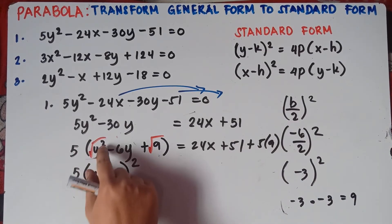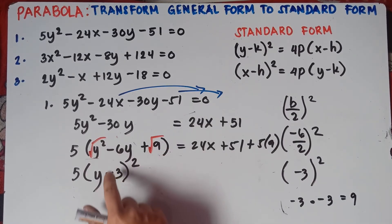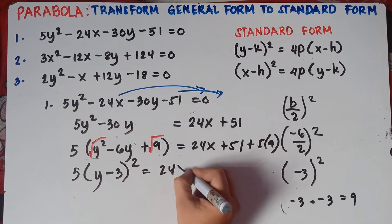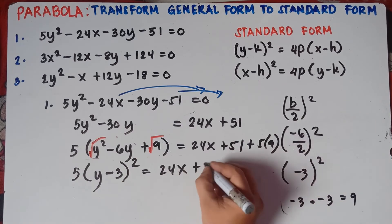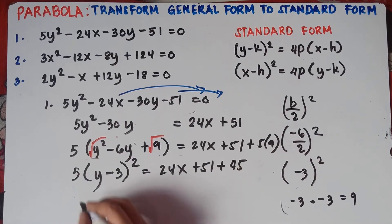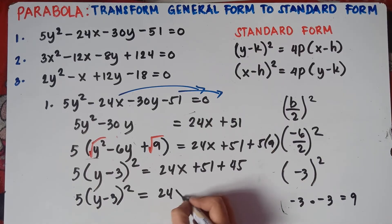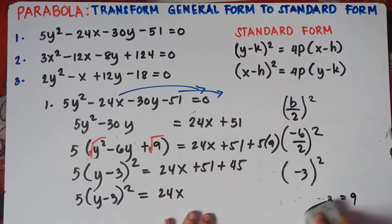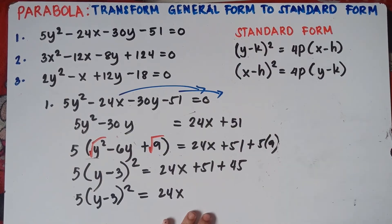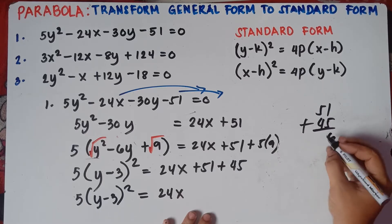So the left side is 5 quantity y minus 3 squared. On the right side: 24x plus 51, and we add 5 times 9 which is 45. So we have 24x plus 51 plus 45. Adding 51 plus 45: 1 plus 5 is 6, 5 plus 4 is 9, giving us 96. So we have 5 quantity y minus 3 squared equals 24x plus 96.